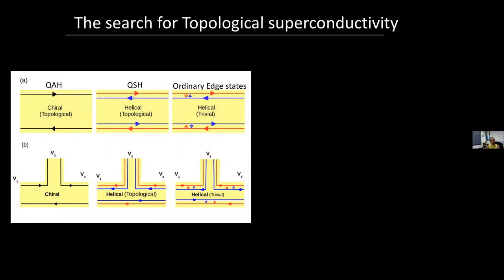I want to start by making an analogy to ordinary topological insulators. Take the example of a quantum spin Hall insulator, where you expect to see topologically protected edge states. In a quantum spin Hall system, you have helical edge states — two spin channels — and while ordinary impurities cannot scatter you from one to the other, magnetic impurities can. This problem goes away in the quantum anomalous Hall insulator, where you have a chiral edge mode. The topology of the bulk determines the kinds of edge modes in these systems, and these are topologically protected.